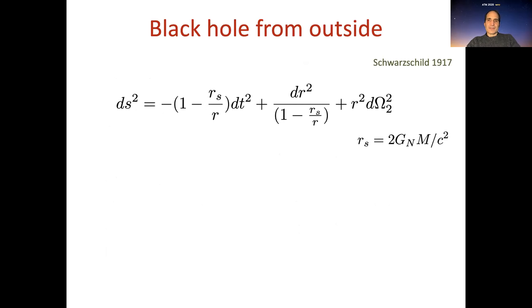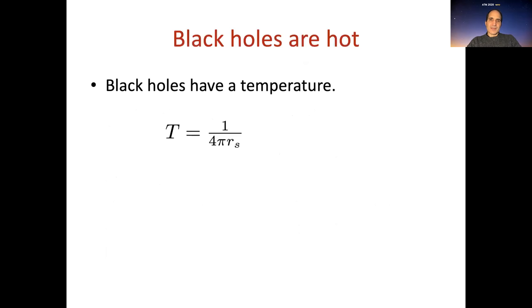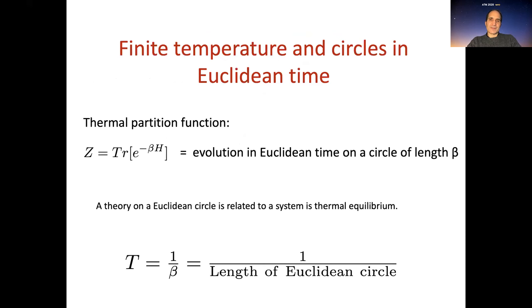The story starts with the black hole. This is the black hole metric that I'm sure you've seen many times. It's important for us that black holes have a temperature — the famous Hawking radiation effect. The temperature is given by a simple formula in terms of one over the size of the black hole.